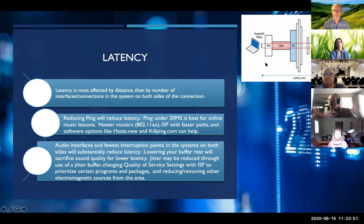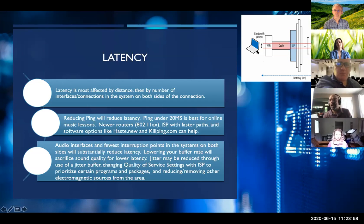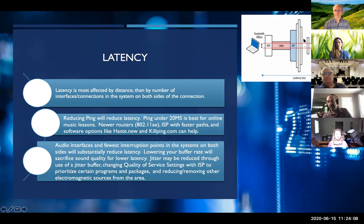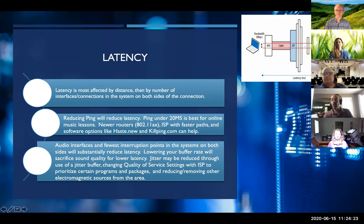On the left: a laptop goes through Wi-Fi, cable, and internet service provider — many hops. On the right: a direct ethernet connection goes straight to the service provider and out. So you've reduced your latency by reducing the number of levels you're going through.